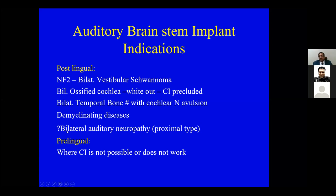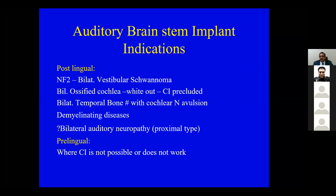The bigger emerging indication today is pediatric auditory brainstem implantation — in children who are born with complete absence of the cochlea and cochlear nerve. A cochlear implant is not possible if there is no cochlea to place it in. Similarly, if the cochlear nerve is not present, there is no point in a cochlear implant. These children have no other option but a brainstem implant.